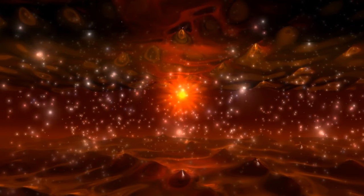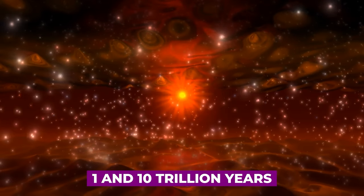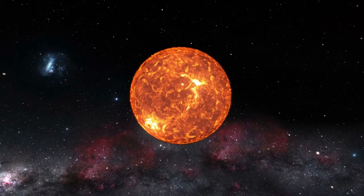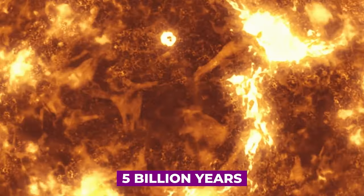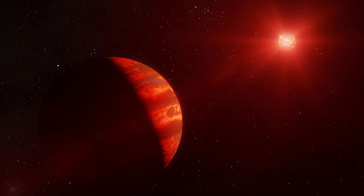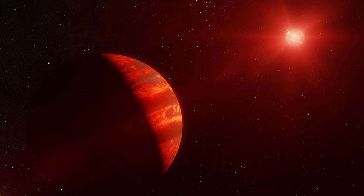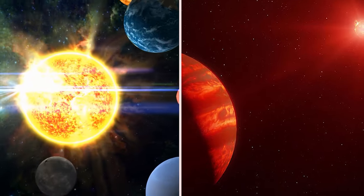Red dwarfs burn so slowly that their average lifespan spans between 1 and 10 trillion years. In comparison, our sun, with approximately 5 billion years left in its life, seems rather short-lived. None of the trillions of red dwarfs in existence have reached the later stages of development. They are all, in essence, still infants in the cosmic sense.